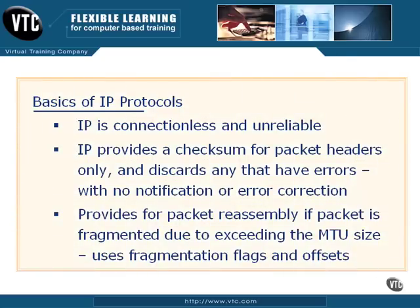Like UDP, IP is connectionless and unreliable. It does not establish a connection; it doesn't require a three-way handshake like TCP does. It doesn't establish a connection and it's unreliable — it does not care whether the data gets there or not.